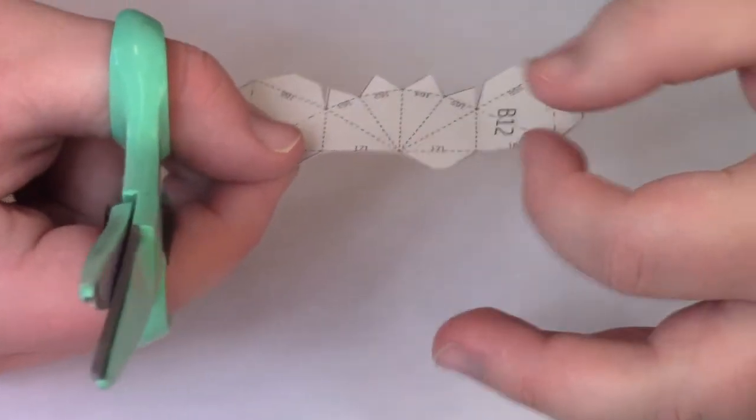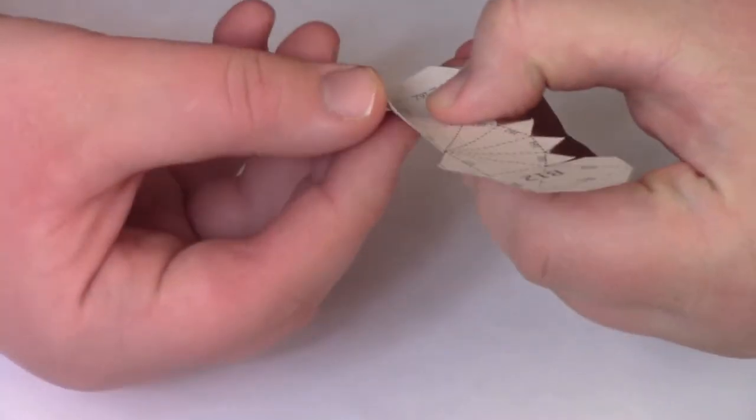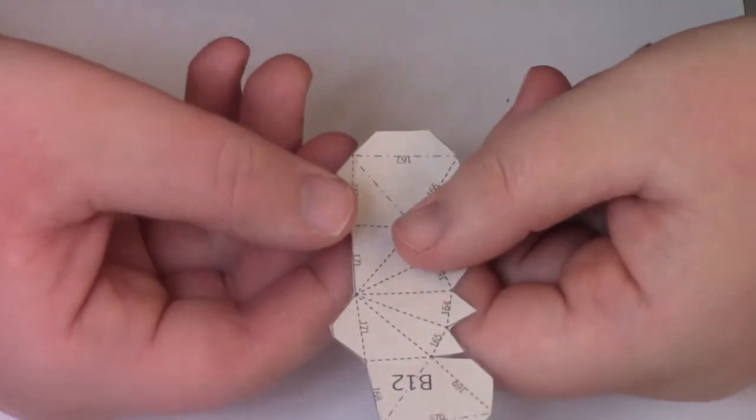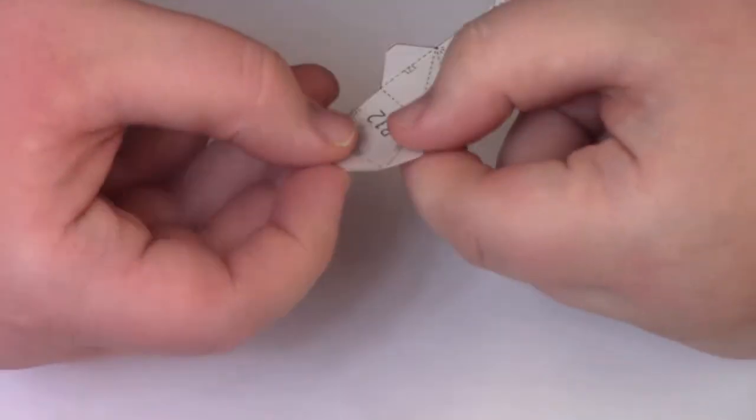The first step for the penguin involves cutting out pieces B1 and B12. Trim along the red lines. Mountain fold all the green dot dash lines and valley fold the blue dotted lines.